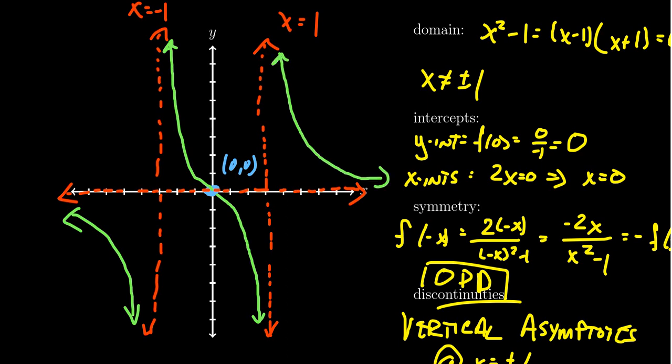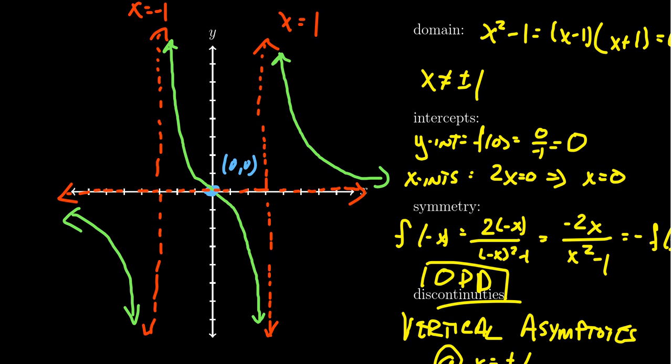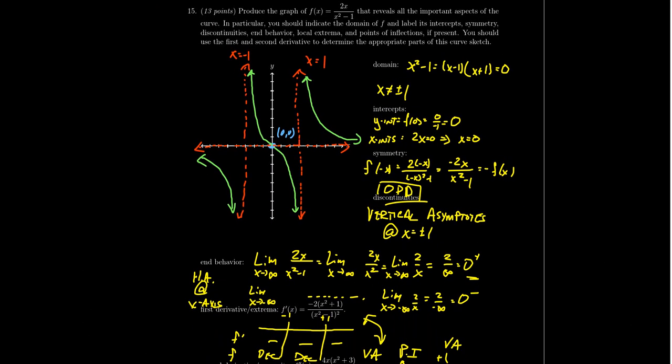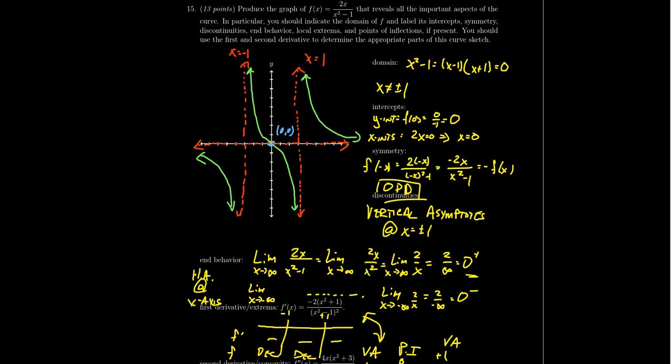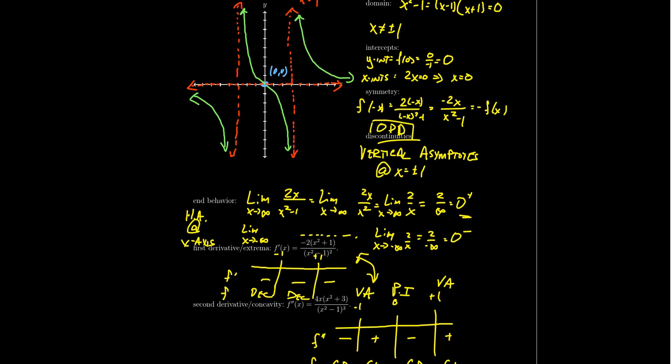This gives us our sketch of the graph of f(x) = 2x / (x² - 1), incorporating all of the information about monotonicity, concavity, discontinuities, and end behavior. I'll zoom out a little so you have a chance to see everything at once — I can't fit everything, but there it is. Thanks for watching, everyone.